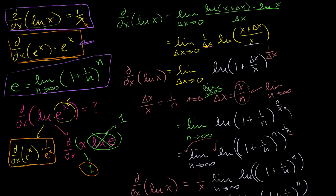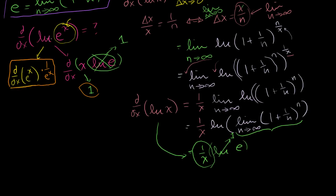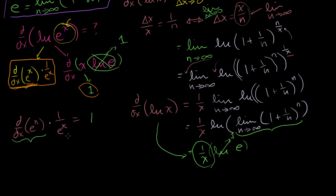Clearly, both approaches computed the derivative of the natural log of e to the x. One way I got 1; the other way I got this expression with the unknown derivative. They must be equal to each other. I still don't know what the derivative of e to the x is — I just left it open. But we know that when we multiply it by 1 over e to the x, we should get the same result as the other approach, so that product must equal 1.